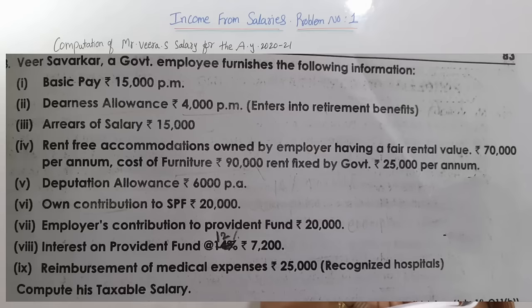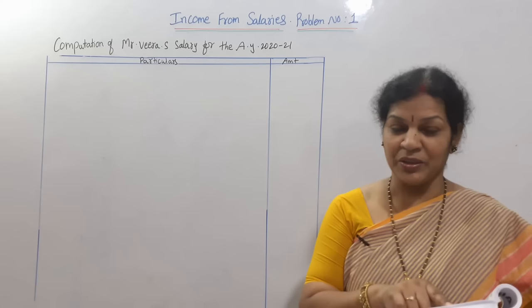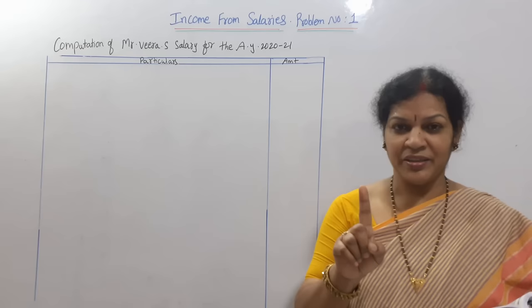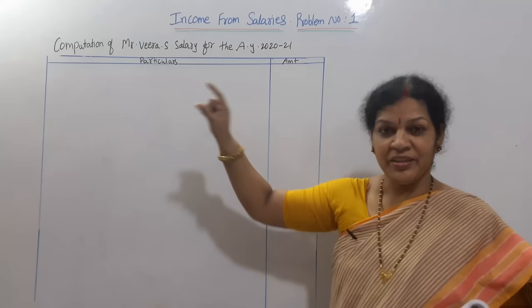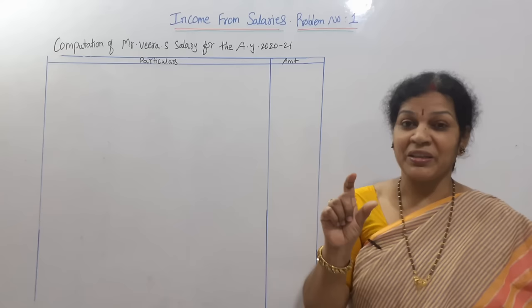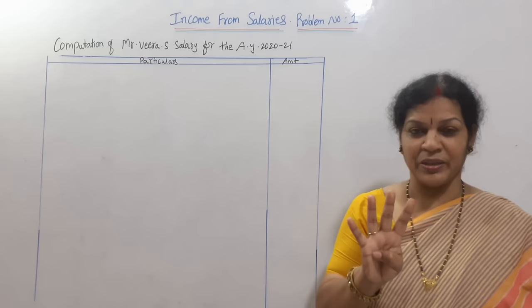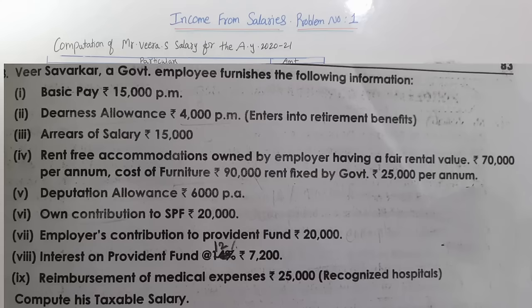The first problem: Mr. Sarwakar, a government employee, furnishes the following information. First point is basic pay ₹15,000. We have four kinds of columns in the table — salaries, allowances, perquisites, and profit in lieu of salaries. Basic pay comes under the salaries column. Dearness allowance ₹4,000 per month comes under the allowances column.